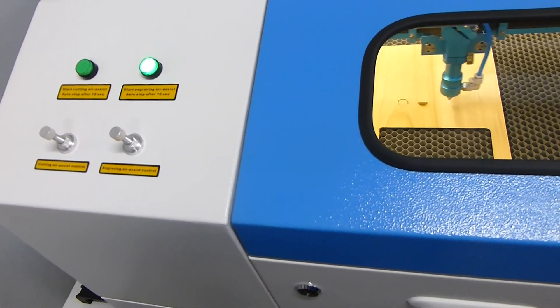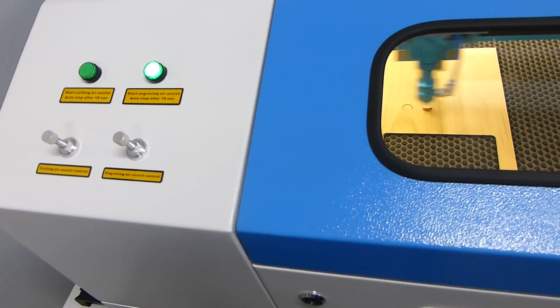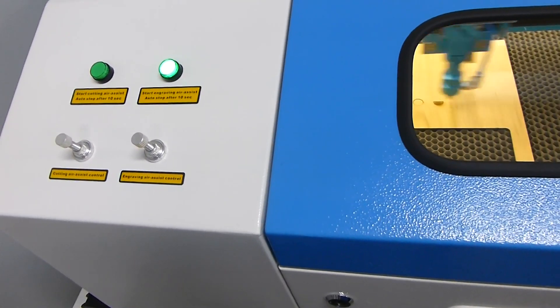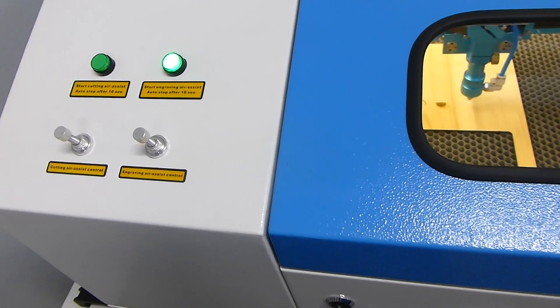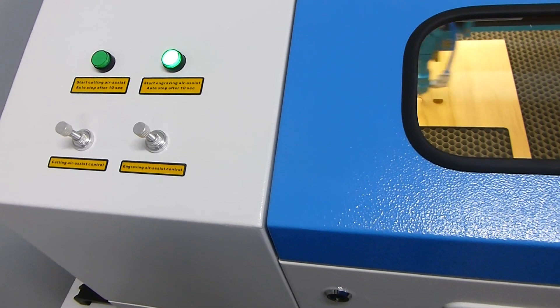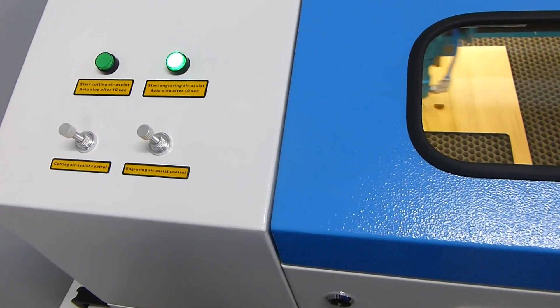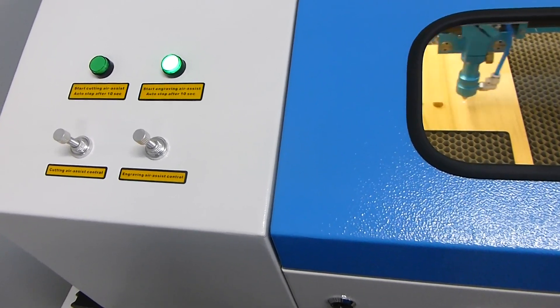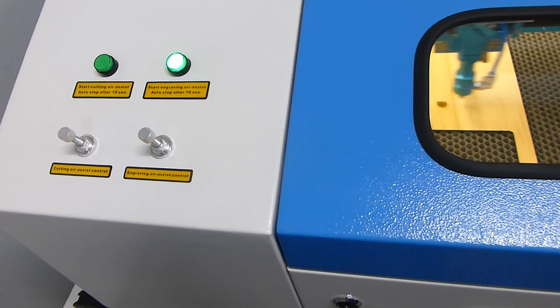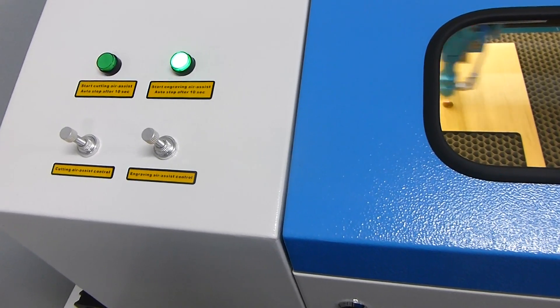It looks like it's working. It started off on cut mode, which means air assist on in that layer. And if you turn air assist off in the layer, you still get air assist, but it's the engraving mode.